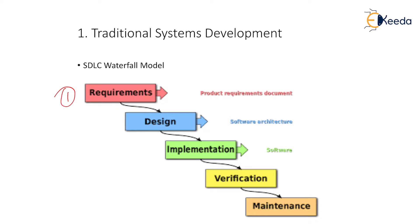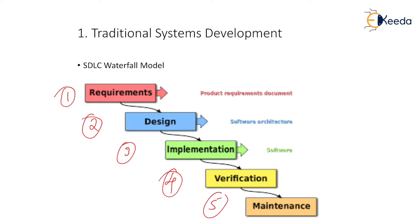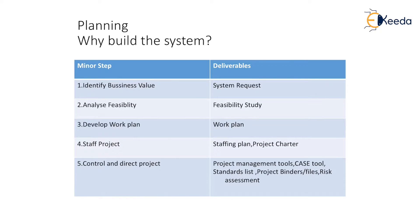First, we are gathering the product requirements. Second, we are designing our model. Third, we are actually implementing our model. Fourth, we are verifying or testing whether it is correct or properly designed. And in the fifth step, we actually maintain whatever the deployed product is.